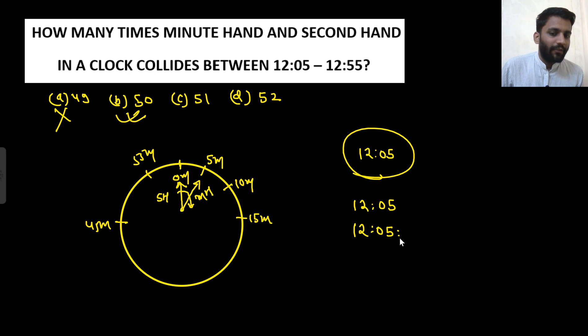After 12:05, we can't really tell the exact time, it can be 12:05:06 seconds or 5 point something seconds, but certainly after 12:05, the second hand will start moving and will close the minute hand.